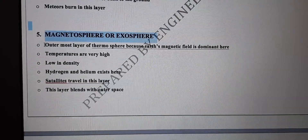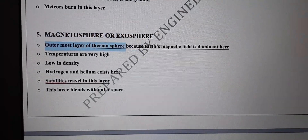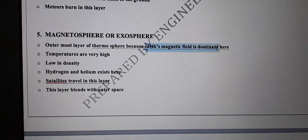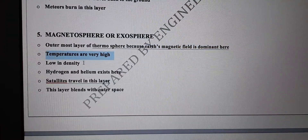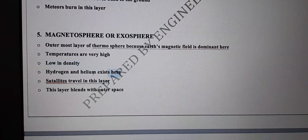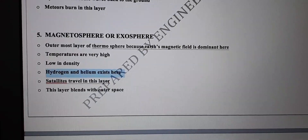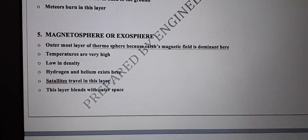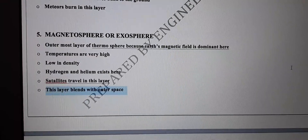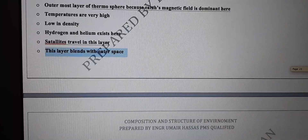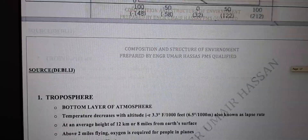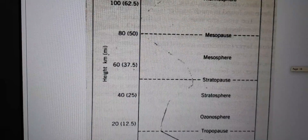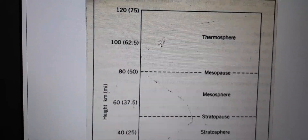The last one is the exosphere or magnetosphere — the outermost layer. Above the thermosphere, this is called the magnetosphere, where Earth's magnetic field is dominant. Temperature is very high and density is very low. Hydrogen and helium exist here as lighter gases, so they can move upward. Satellites travel in this layer — another important MCQ. This layer blends with outer space.